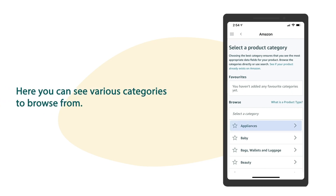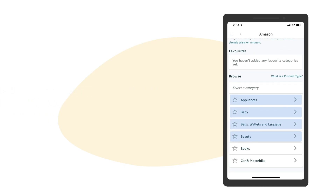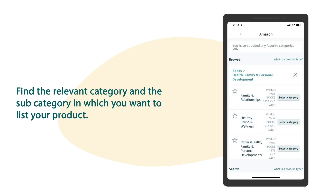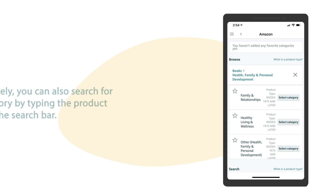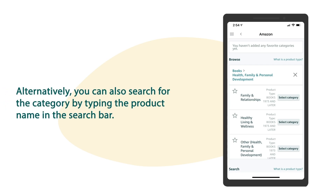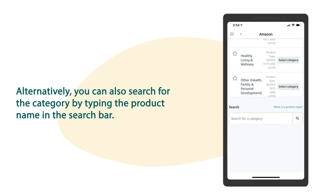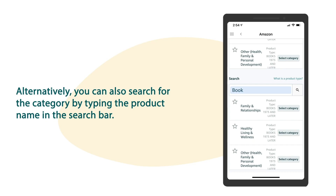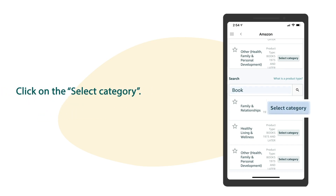Here you can see various categories to browse from. Find the relevant category and the subcategory in which you want to list your product. Alternatively, you can also search for the category by typing the product name in the search bar. Click on select category.